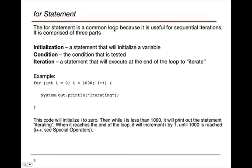So in the for statement, the for statement is a common loop because it's used for a lot of sequential iterations, say 1 to 100, or 1 to 1000, or something along those lines. As we said before, the initialization is a statement that initializes the variable, and that you can see here int i is equal to zero. The second piece to this is a condition, i is less than 1000, and that is generally like the others. And the iteration is a statement that will execute at the end of the loop to iterate, in this case i++. Now i++ is a special operator that basically adds 1 to the existing value of i, and it will execute all of the statements within that loop, between the braces.